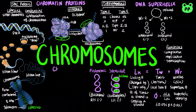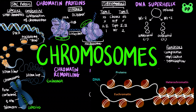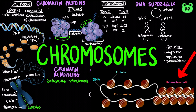Chromatin remodeling is an important mechanism for regulating eukaryotic gene expression. It is a dynamic interchange between the loose active form of chromatin known as euchromatin and the compact inactive form known as heterochromatin. There are three main types of histone modifications that remodel chromatin.